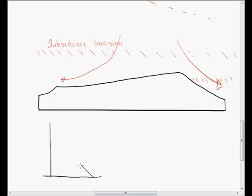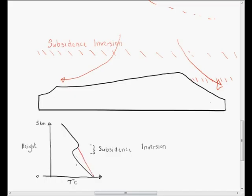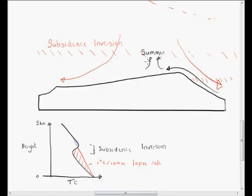Looking at the temperature-height graph, the air cools as you go up as expected, but halfway up there is an increase in temperature — this is the subsidence inversion, and it acts to block rising air. Rising air cools at one degree Celsius per 100 metres, meaning it is warmer than the surrounding air and keeps rising, but when it reaches the subsidence inversion it is cooler than the surrounding air and stops rising, preventing weather from forming. However, in summer the subsidence inversion is so high that warm Indian Ocean air can penetrate into the interior, allowing rainstorms to develop. In winter, the subsidence inversion is below plateau level, so warm moist Indian Ocean air doesn't even reach the interior.